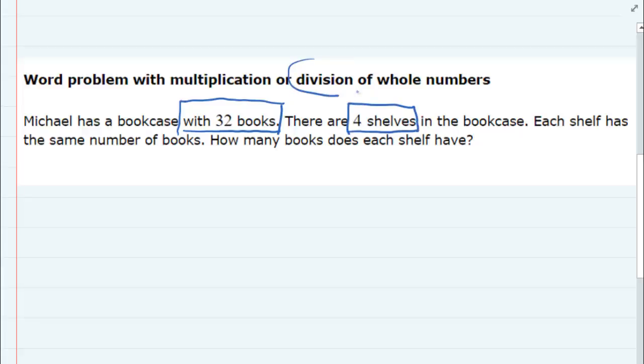So 32 books are going to be spread out or divided over four shelves. So this time, our operation is going to be division. So we're going to take those 32 books and divide them by four to find out how many books are going to be on each shelf.